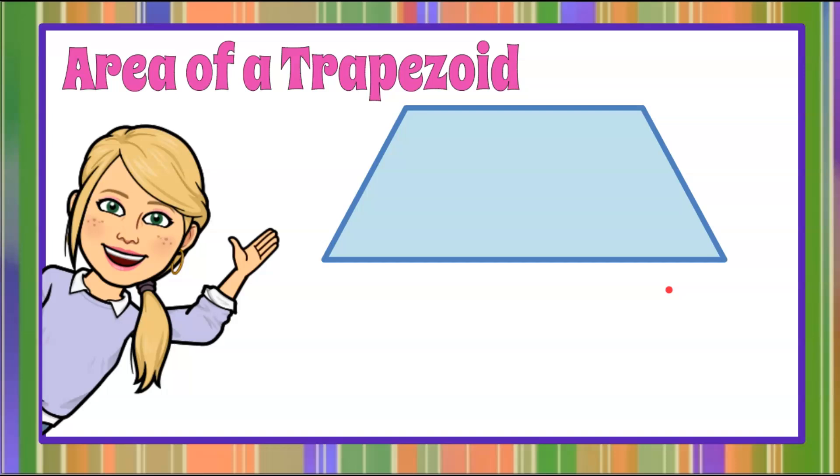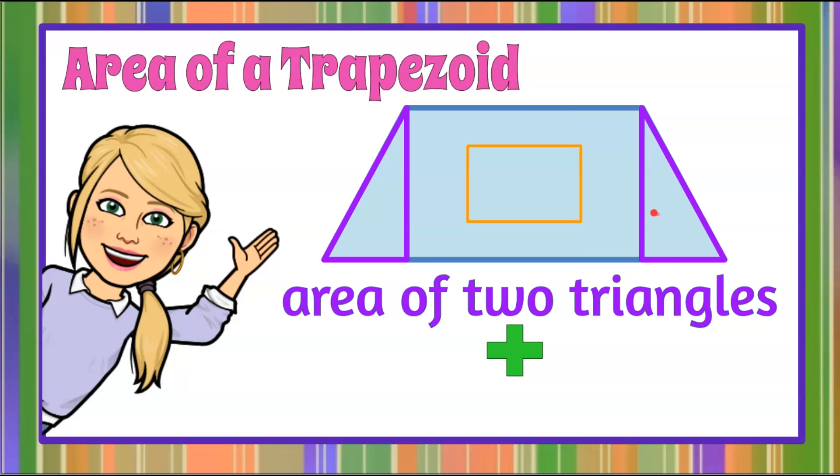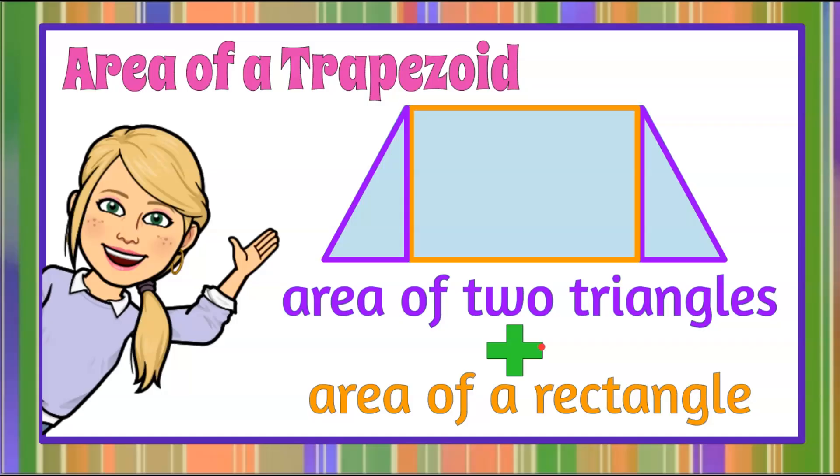It's the magic of math here and today we're going to be finding the area of a trapezoid. We're going to do this by identifying the two triangles and finding their area and then the rectangle that joins them and find that area and add the areas together.